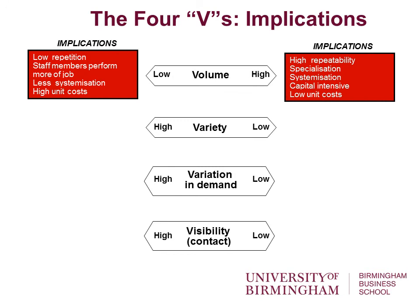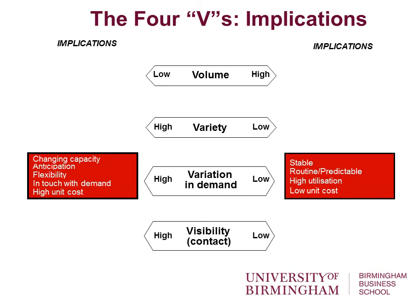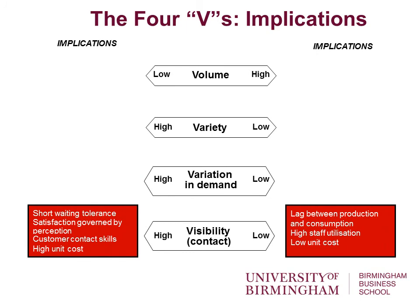There are implications of the Four V's which you can look through in your own time. Essentially, the way to think about this is that everything to the right-hand side of the slide is lower in unit cost - cheaper to deliver through economies of scale. Whereas everything to the left-hand side is going to be more expensive per unit because you're delivering something specifically for individual customers.